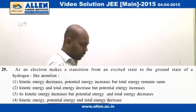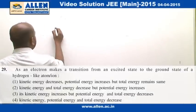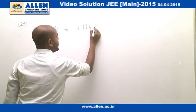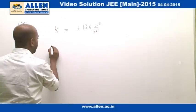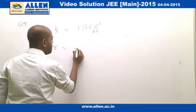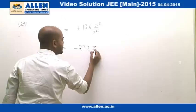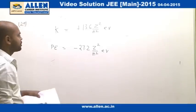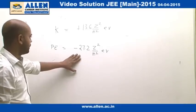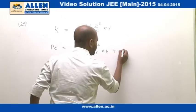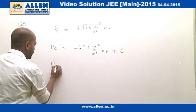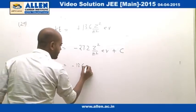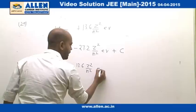Question 29 is based on the Bohr model. In the Bohr model, by putting all the values, the kinetic energy equals +13.6 Z² / n² electron volts, and the potential energy equals -27.2 Z² / n² electron volts. This formula is true if we assume potential at infinity to be zero. Even if we don't assume that, there would be some constant, and the total energy would be the summation of KE and PE: -13.6 Z² / n² electron volts plus a constant.